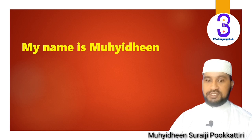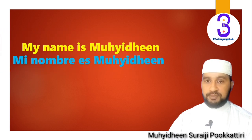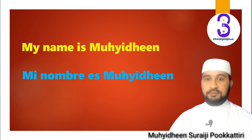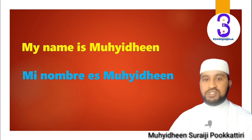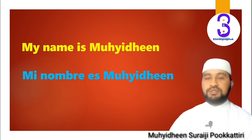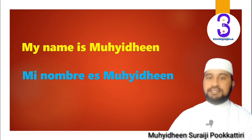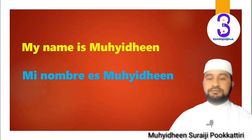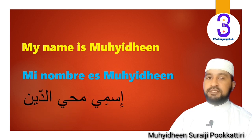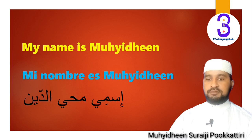In Spanish, to say 'My name is Muhidin' we say 'Mi nombre es Muhidin' — here 'mi' is like 'my,' and 'es' works like 'is.' In Arabic: 'Ismi Muhidin.'